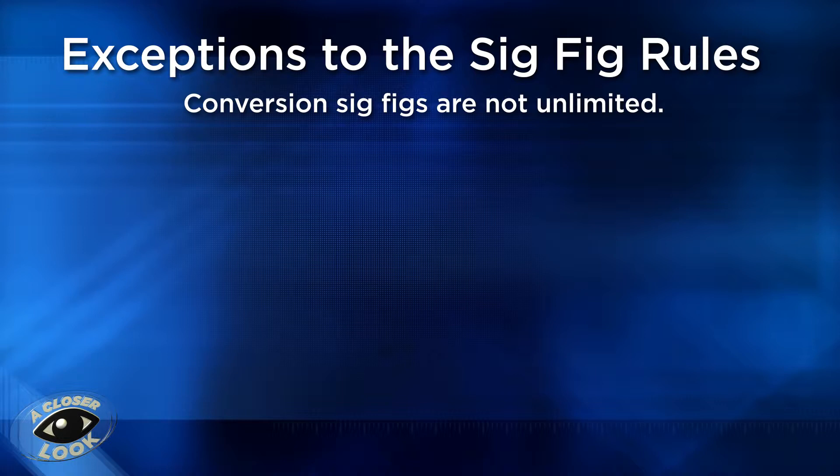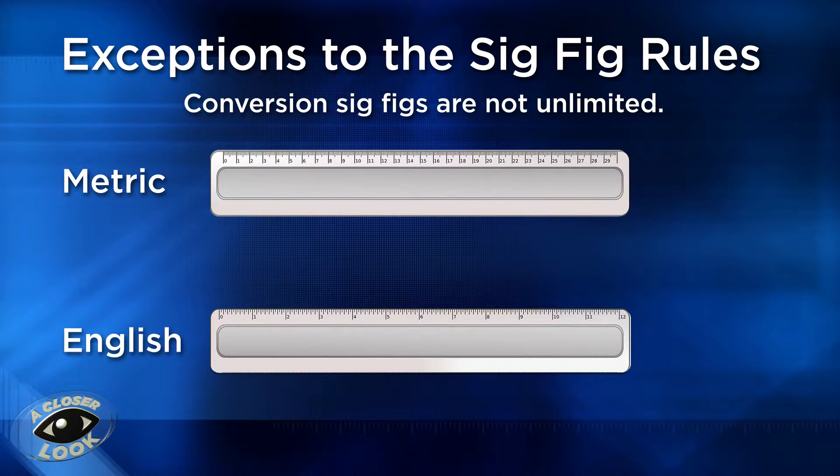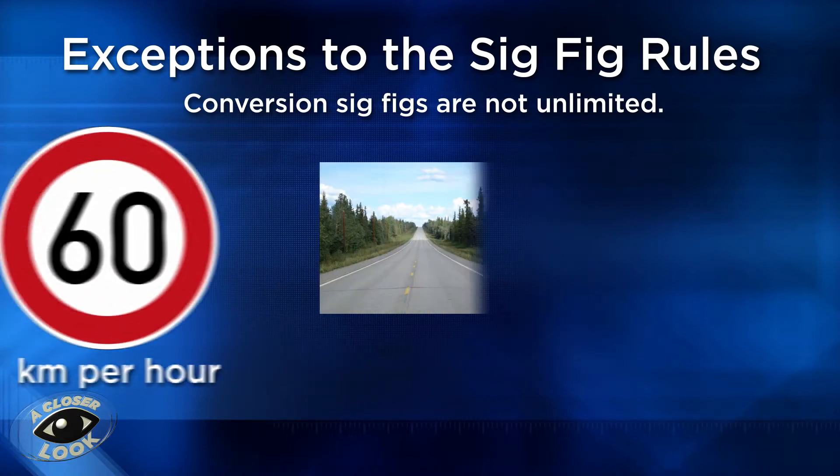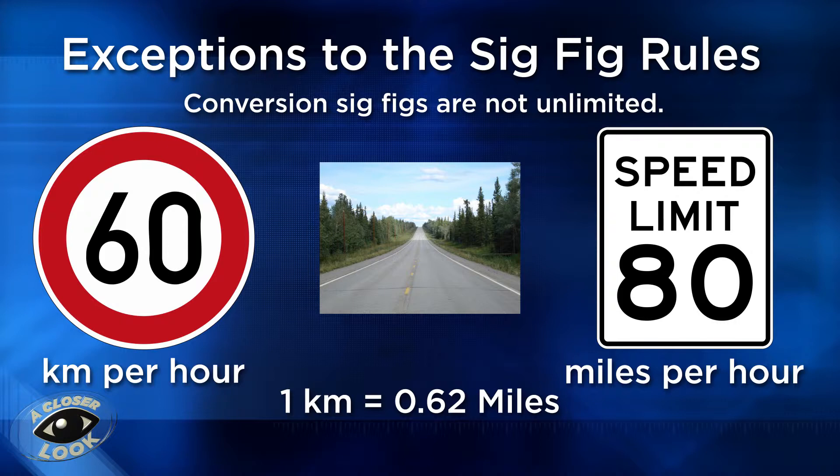Conversions are different. When using conversions, the sig figs are not unlimited. For instance, between metric and English, such as 1 inch to 2.54 centimeters, you are limited to three sig figs. Or a kilometer, which equals 0.62 miles, is limited to two sig figs.